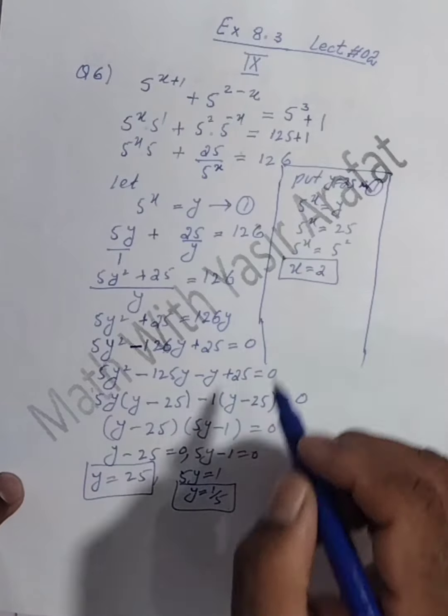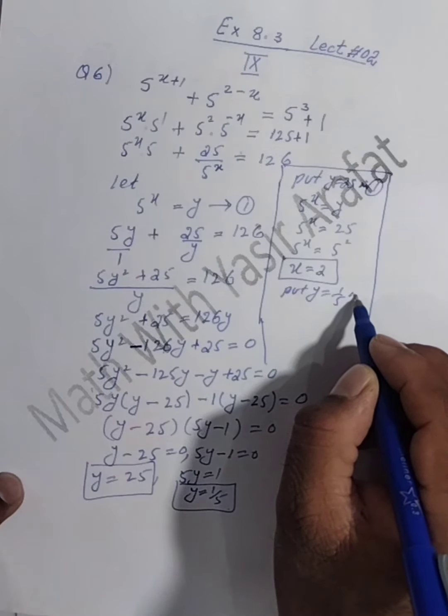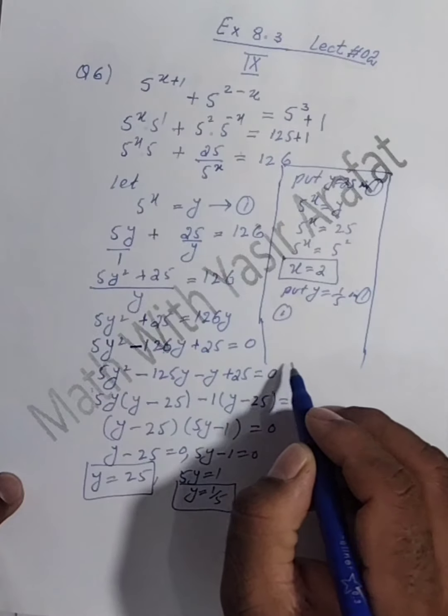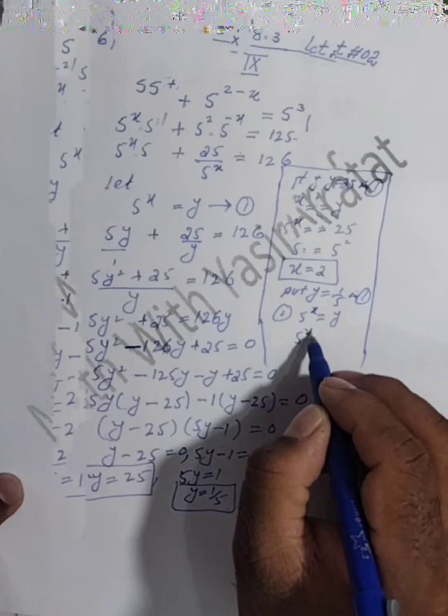Now put the other value, y = 1/5, into equation number 1. So 5^x = 1/5. We can write 1/5 as 5 power minus 1, shifting the denominator to the numerator changes the sign of the power. Since the bases are the same, the powers are equal, so x = -1. Therefore the solution set is {-1, 2}.